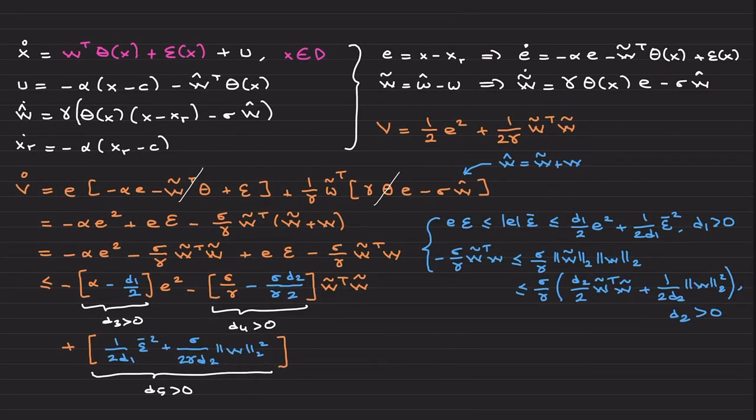All right, so let's do this. We are looking at this system over the compact domain epsilon. Here is our nominal control law, and here is our neuroadaptive control signal, W hat multiplied by theta, including radial basis functions. W hat dot has this gamma learning rate, this radial basis function, X minus X_R, and sigma W hat. This is the sigma modification leakage term. And here is the reference model. And when you deal with such systems, this is the control signal that you need to implement.